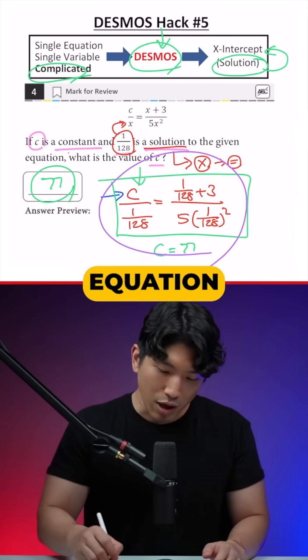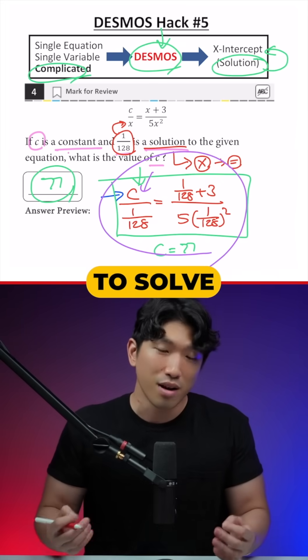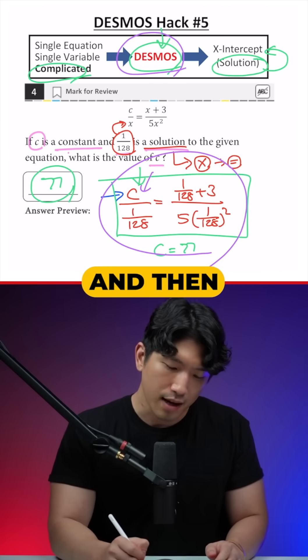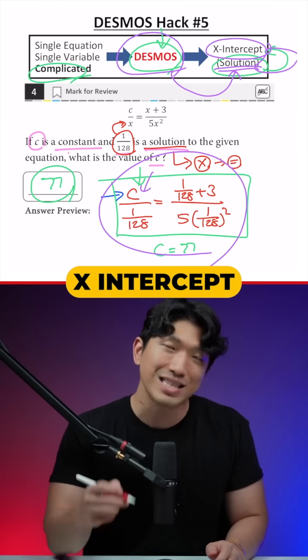So anytime you see a single equation with a single unknown variable, but it's very complicated to solve, then simply pop into Desmos and it will solve it for you by showing the solution as the x-intercept.